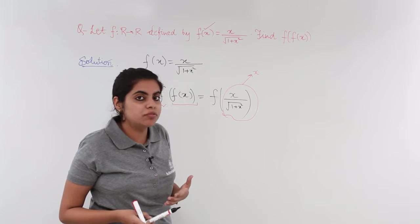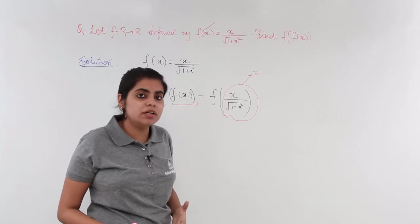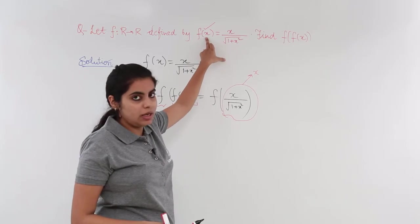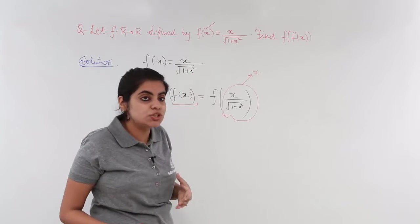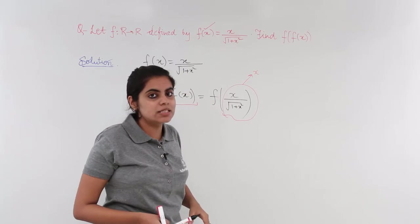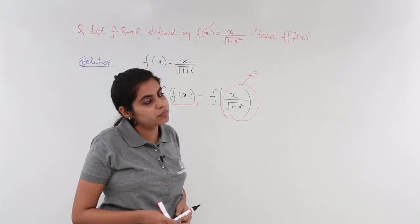Now, what do we mean by f of x? That means wherever we have single variable x, we need to substitute it by this value x upon under root 1 plus x square.